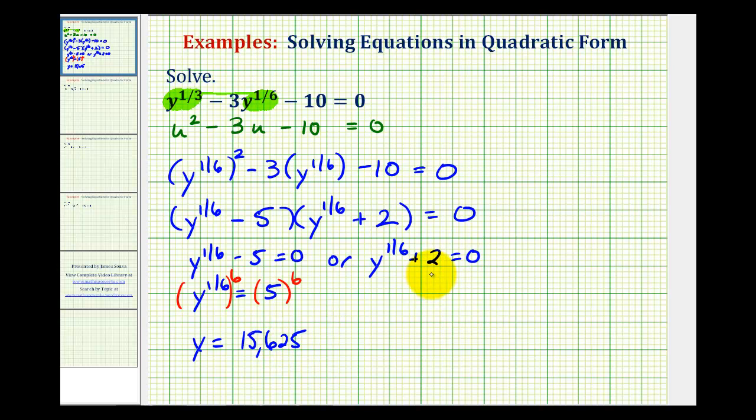On the right side, we would subtract two on both sides. So we'd have y to the one-sixth equals negative two. Raise both sides to the sixth power. And here we have y equals, this would be negative two to the sixth is going to be positive 64.